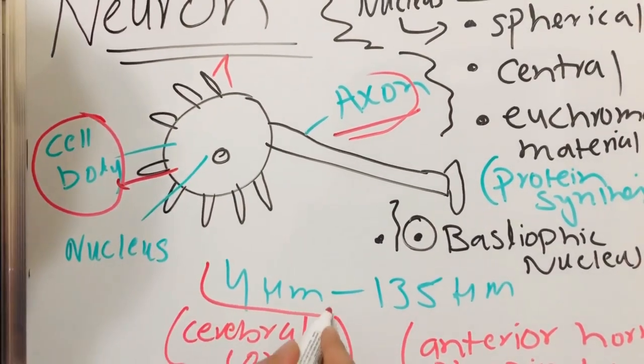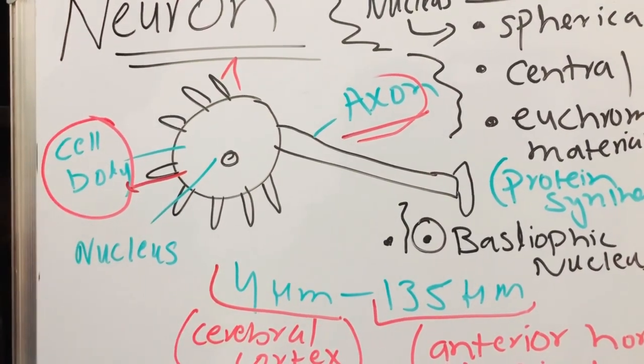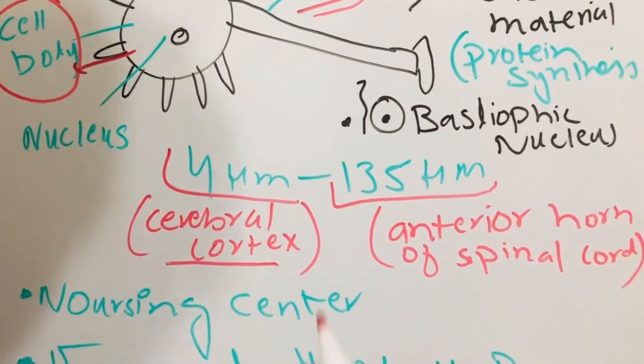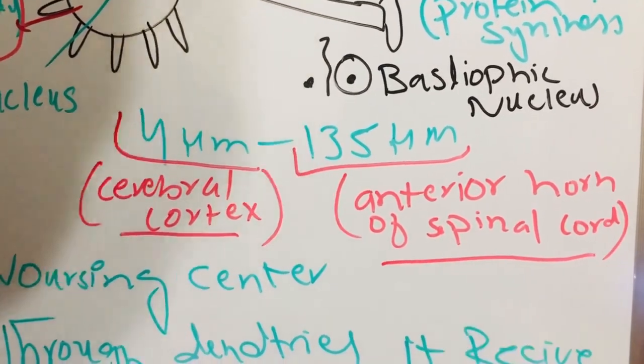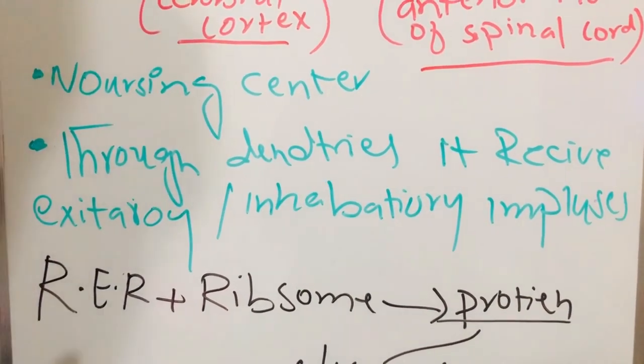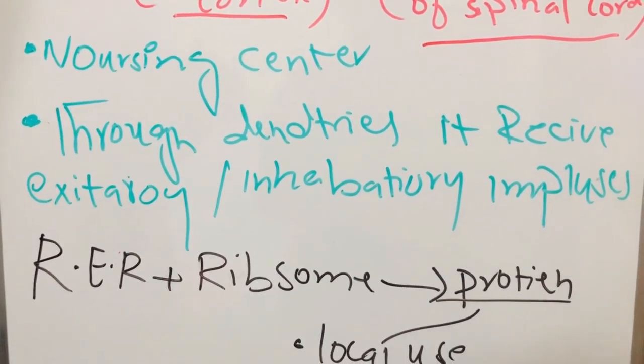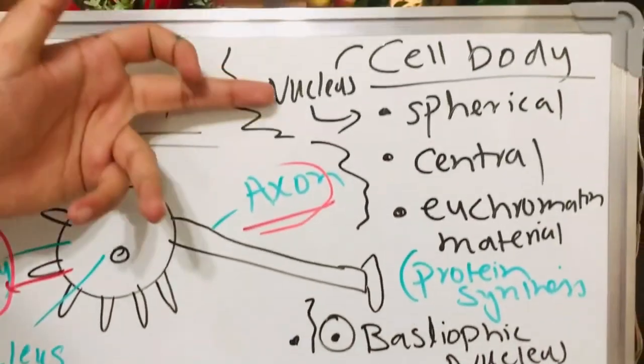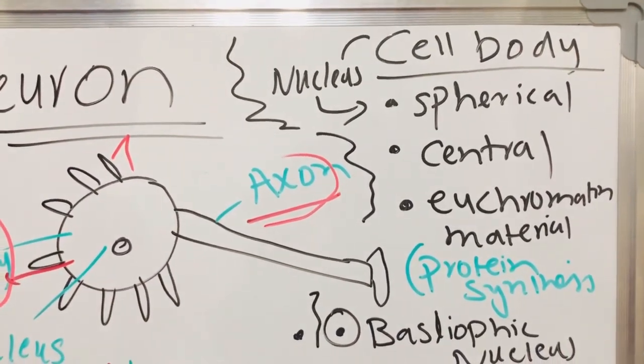We can see the 4 micrometer neuron in our cerebral cortex, and the longest 135 micrometer neuron in the anterior horn of the spinal cord. It is our nourishing center. Through the dendrites it receives excitatory and inhibitory impulses. The cell body contains nucleus. We have spherical type of nucleus with central euchromatin material.